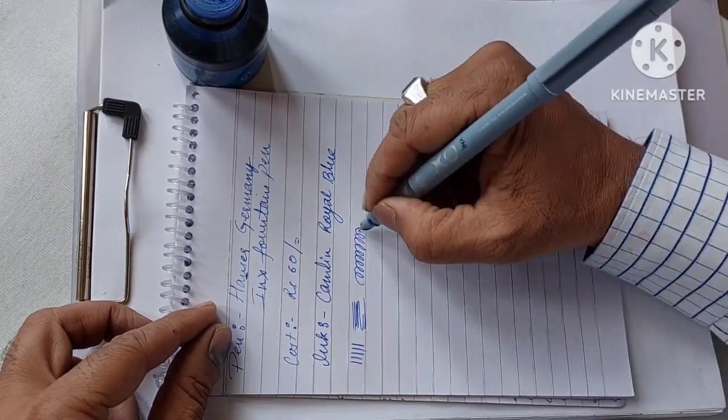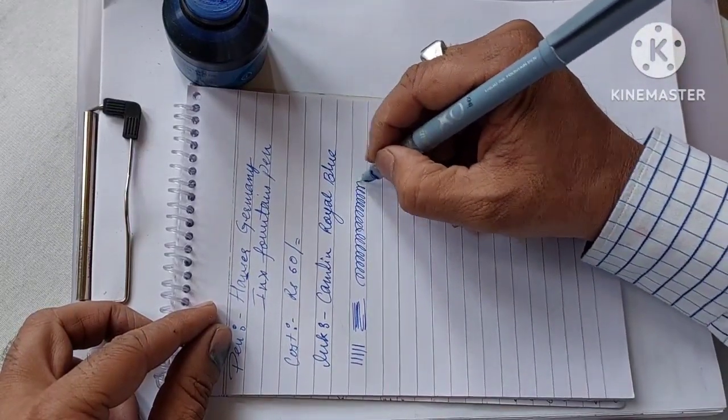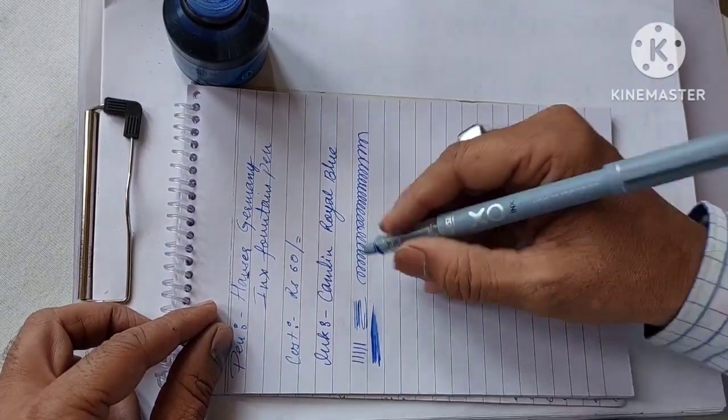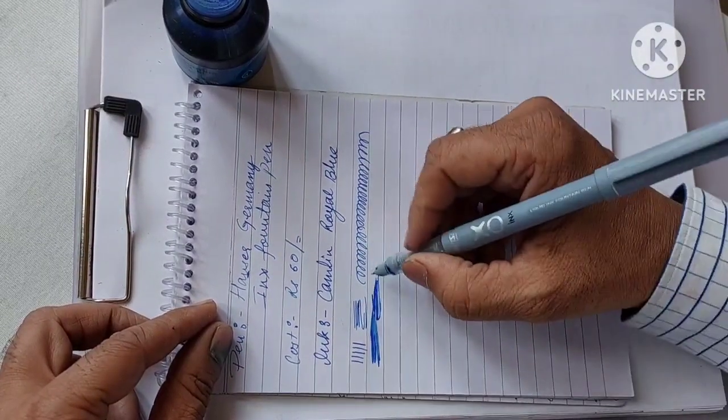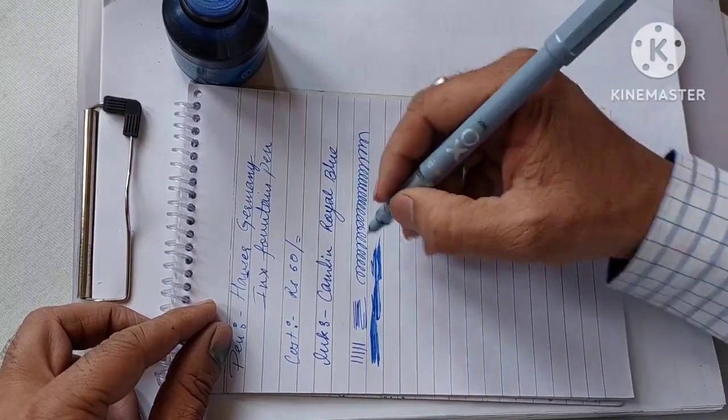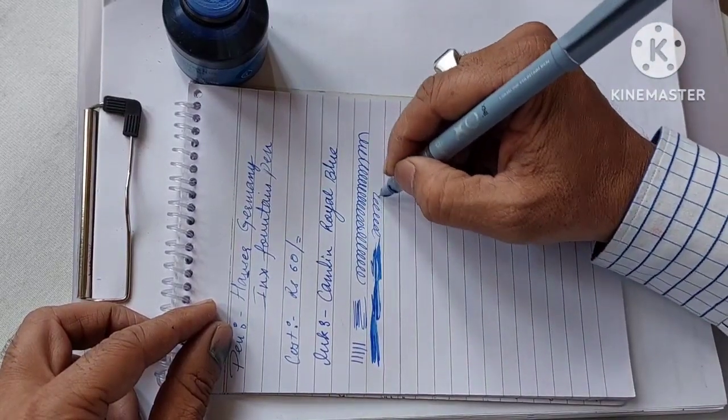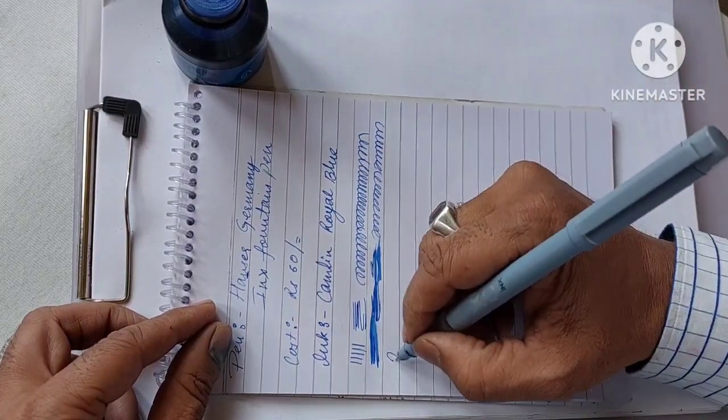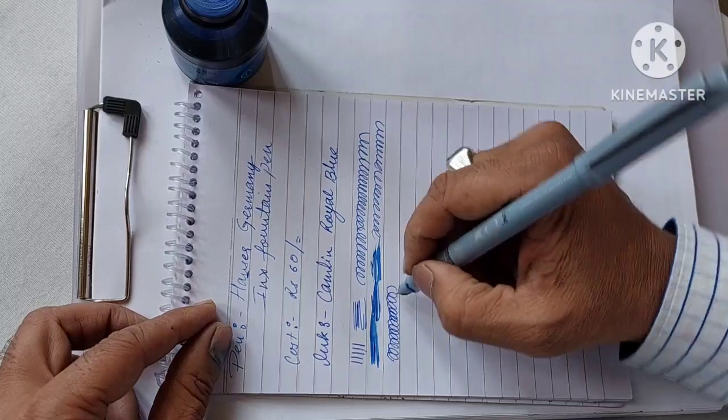Yeah, the ink is adequately flowing through the feeder and yeah, the nib is very scratchy. You can feel the scratchiness of the nib, but it is writing well. The pen writes well and it is a fine tipped nib. It writes well. It is slightly scratchy. That is it.